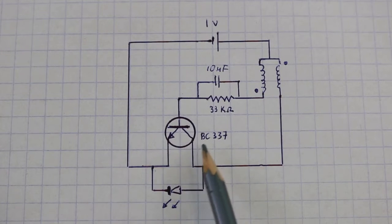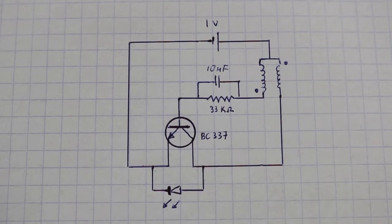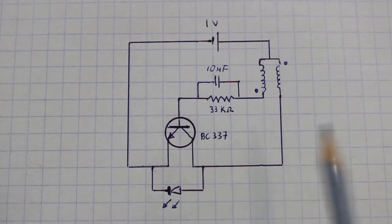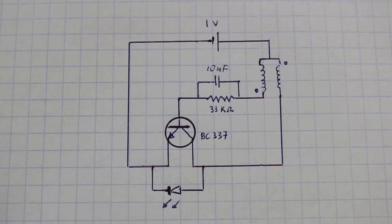The transistor is a BC337, but you can use any NPN small signal transistor. An LED, a resistor of 33 kilo ohms, a capacitor around 10 microfarads, and this inductor here that we will see now how to make it.